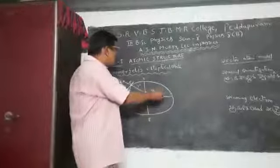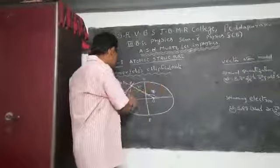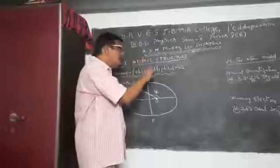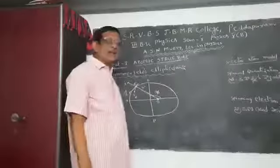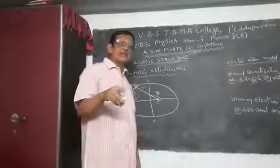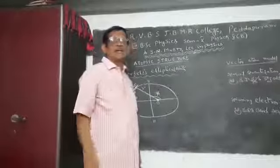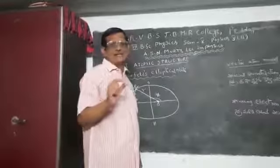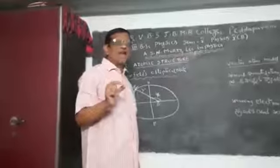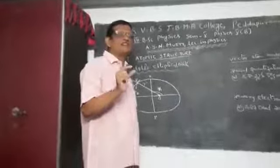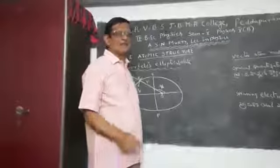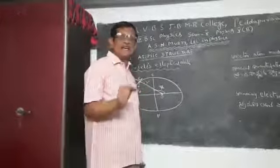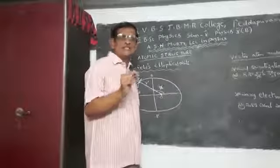Electron revolves around the nucleus in an elliptical orbit. According to Bohr's theory, electron revolves around the nucleus in a circular orbit. A circle is nothing but the locus of all points which are having a fixed distance from a fixed point, and the fixed point is termed as center and fixed distance is termed as radius.